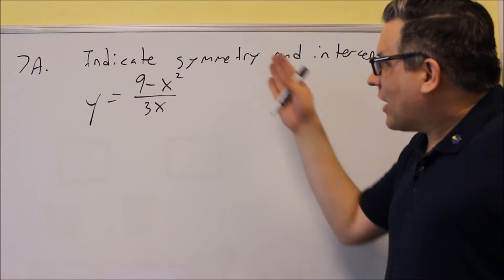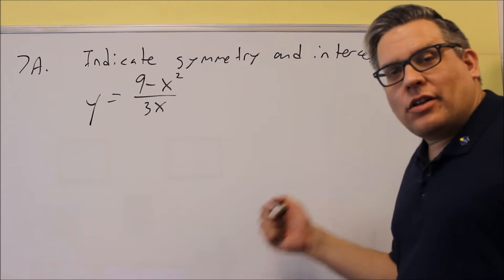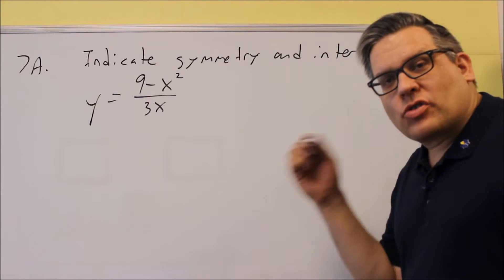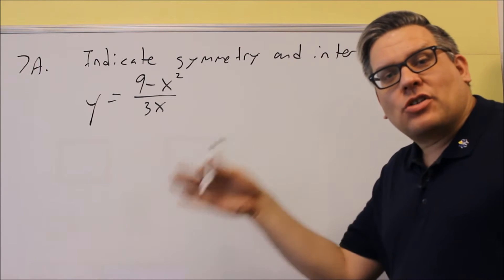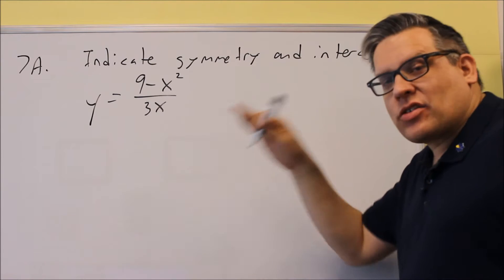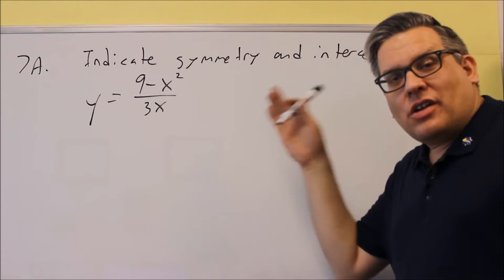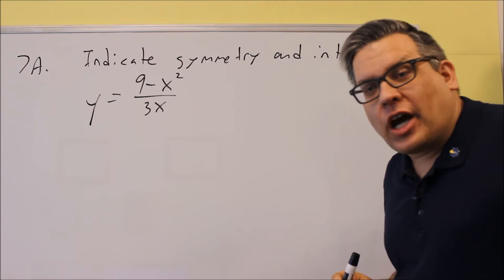Okay, for 7a, it asks us to indicate the symmetry and the intercepts. So for symmetry, there's a test that you're going to do, and you're going to test each one: x-axis, y-axis, and origin, and that's going to tell you whether you have symmetry or not.